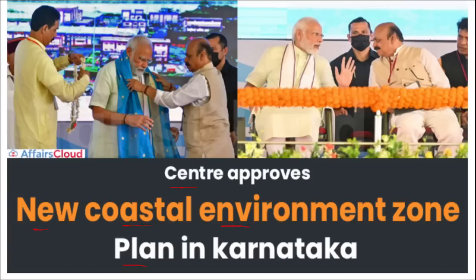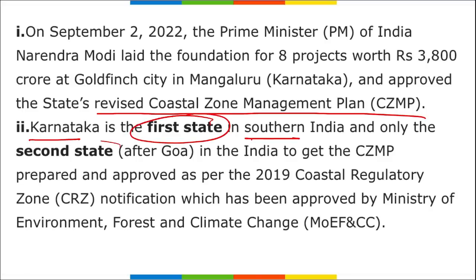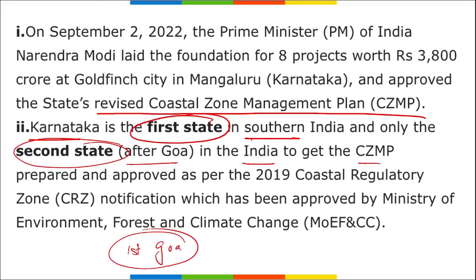The central government has approved a new Coastal Environmental Zone Plan in Karnataka. Prime Minister Narendra Modi laid the foundation for eight projects worth 3,800 crore rupees at Goldfinch City in Mangalore, Karnataka, and approved the state's revised Coastal Zone Management Plan (CZMP). Karnataka is the first state in southern India and only the second state after Goa in all of India to receive the CZMP.